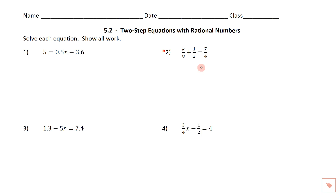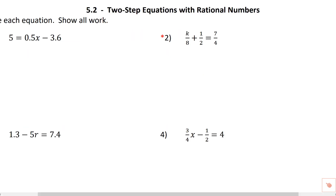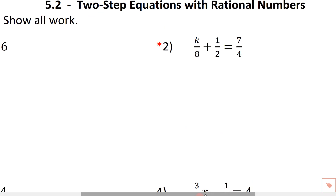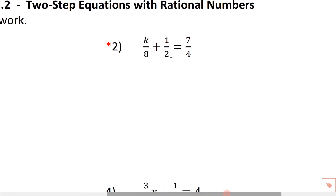I'd like to take a quick look at three or four of the problems in here. I'm going to zoom in on number two and make it a little bit bigger. So here's what we're going to do on this problem — we're going to solve this for k. We're going to get that k all by itself. If we put a dotted circle around this, this is what I want to get by itself. So we want to get rid of the one-half, the adding one-half.